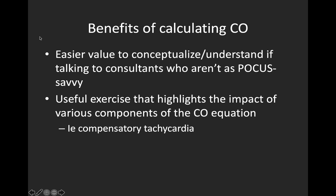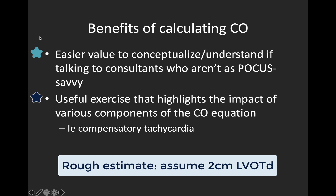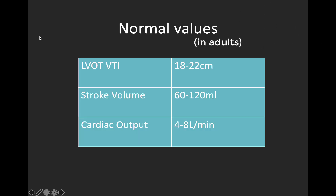On the flip side, there are a couple of reasons why it might be useful to calculate cardiac output at least sometimes. It may be an easier value to conceptualize when speaking to practitioners who aren't as POCUS savvy, as it's a more familiar term. It's also quite useful for teaching purposes, as it highlights the impact of various components of the equation on cardiac output — for example, the impact of compensatory tachycardia to maintain cardiac output in a patient with low stroke volume. If you want a rough figure but can't obtain an LVOT diameter measurement, you can use the assumption of a standard two centimetre LVOT diameter. Normal values: LVOT VTI is 18 to 22 centimetres, stroke volume is 60 to 120 millilitres, and normal cardiac output is 4 to 8 litres per minute — all in adults.